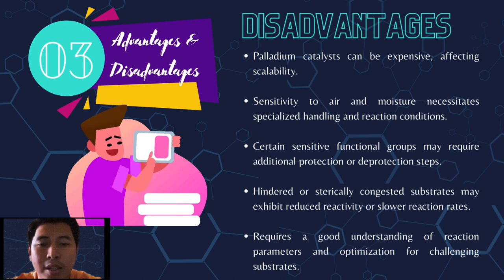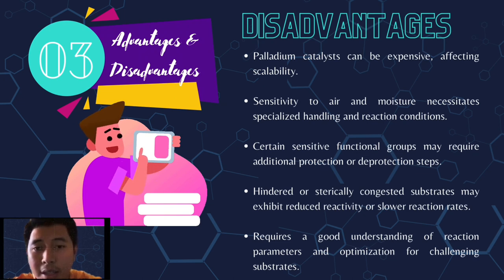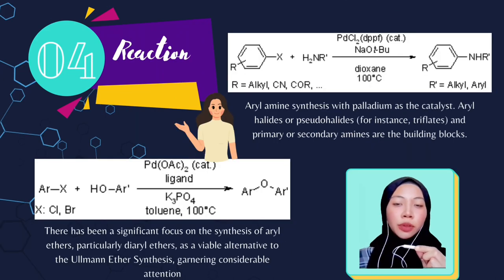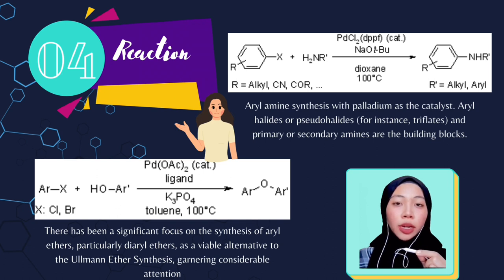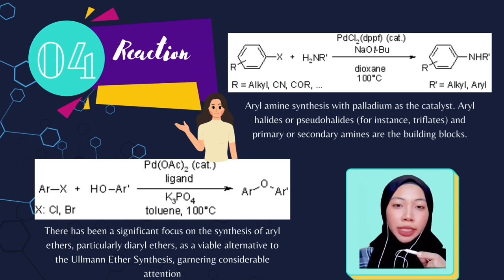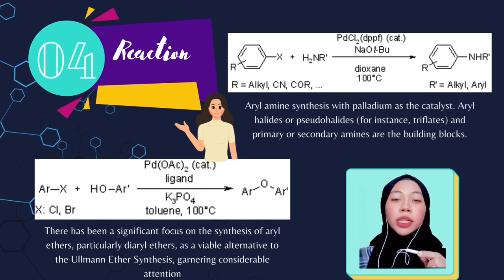It also requires a good understanding of reaction parameters and optimization for challenging substrates. For the first figure showing the Buchwald-Hartwig reaction, it indicates palladium-catalyzed synthesis of aryl amines, where the starting materials are aryl halides or pseudohalides and primary or secondary amines.